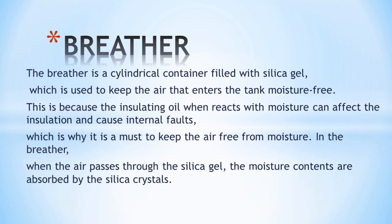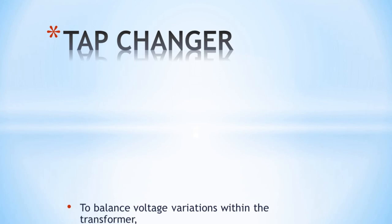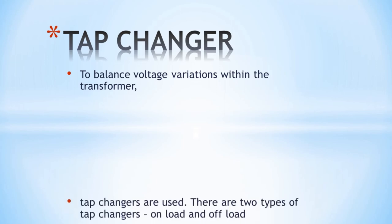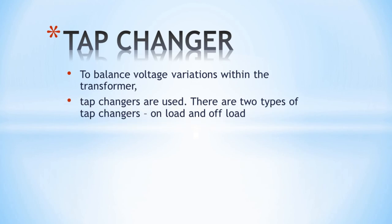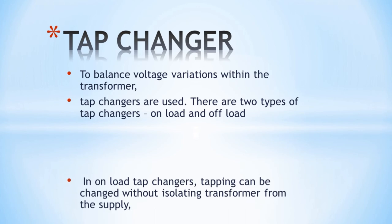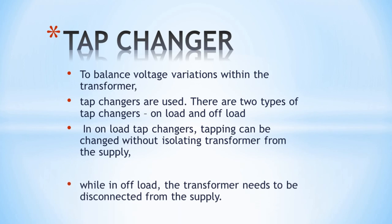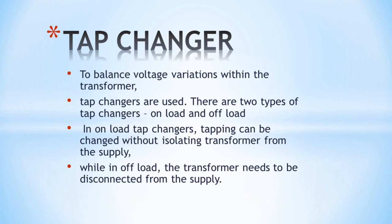The next part is the tap changer. If we want to adjust the voltage above or below a set level, we can use the tap changer to change the voltage output. There are two types: on-load tap changer and off-load tap changer. In an on-load tap changer, tapping can be changed without isolating the transformer from the supply. For an off-load tap changer, the transformer needs to be disconnected from the supply first.